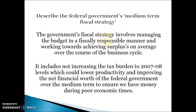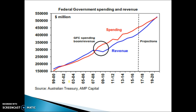To summarise the medium-term strategy: the government's fiscal strategy involves managing the budget in a fiscally responsible manner to achieve surpluses on average over the course of the business cycle. It includes not increasing the tax burden, as that might reduce productivity, while ensuring the net financial worth of the government increases over time. There is a real commitment to reducing the gap between spending and revenue, but it's being done gradually rather than quickly.